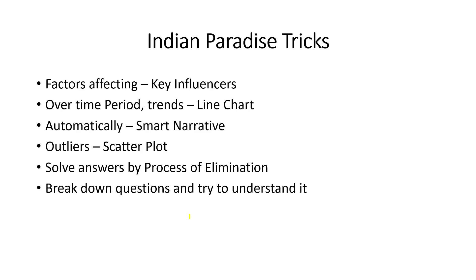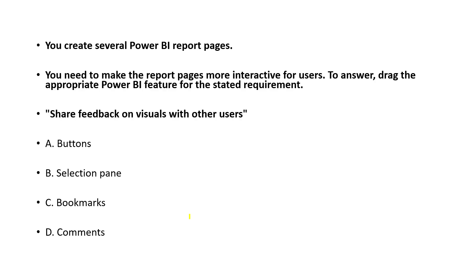Also, solve answers by process of elimination. If four options are there and you're confused between two, remove the other two you're sure about. This is known as process of elimination. Then break down the questions line by line — first understand one line, then go to the next — so you can answer in real exam conditions.